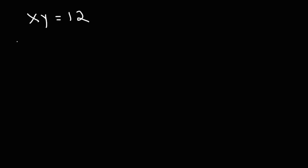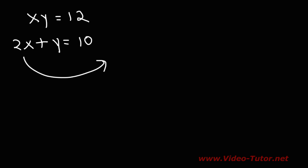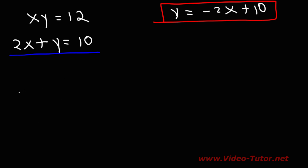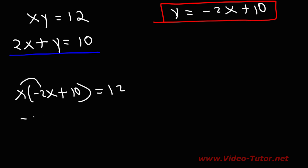Let's move on to the next problem: x times y equals 12, and 2x plus y equals 10. Substitution is recommended here since elimination won't work. I'm going to isolate y from the second equation by moving 2x to the other side, giving y equals negative 2x plus 10. Let's substitute this into the first equation: x times (negative 2x plus 10) equals 12, then distribute to get negative 2x squared plus 10x equals 12.